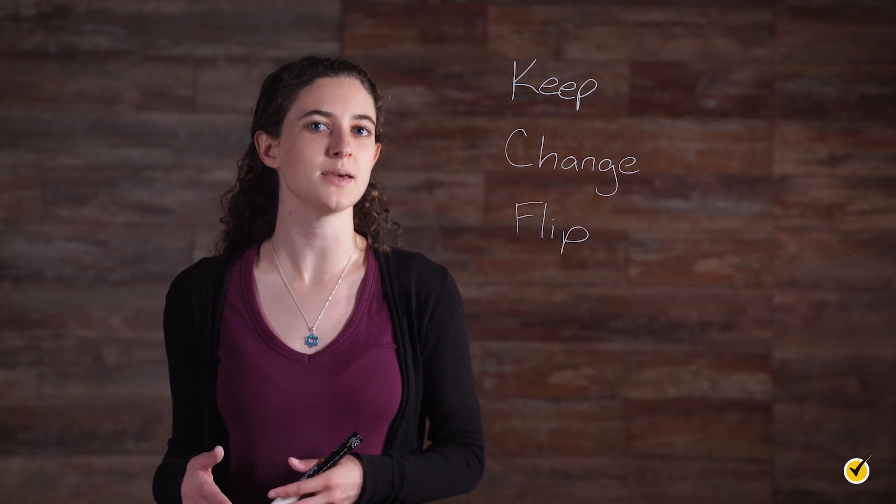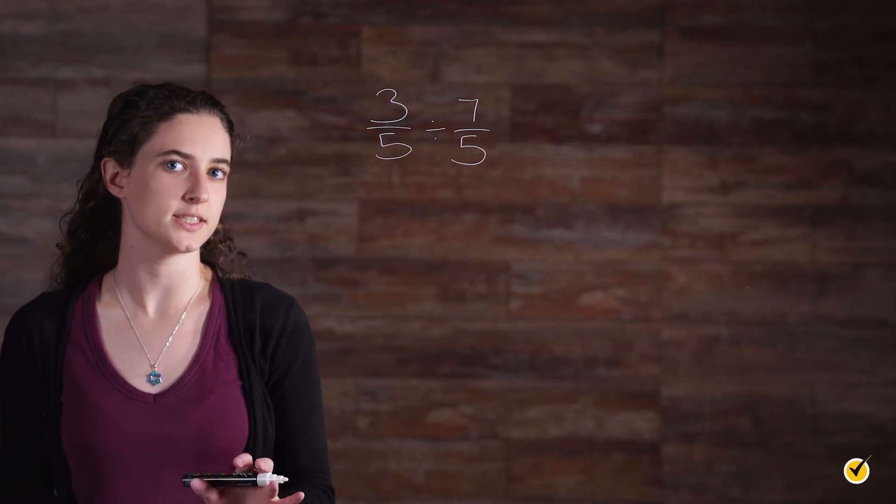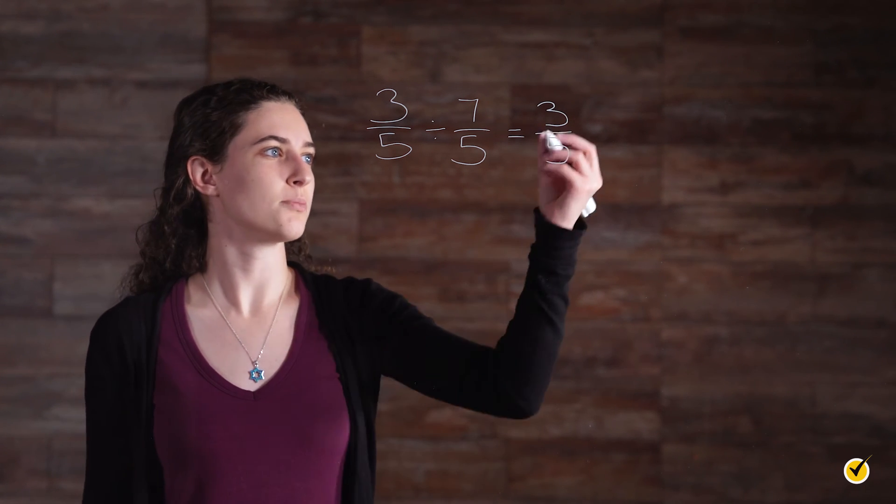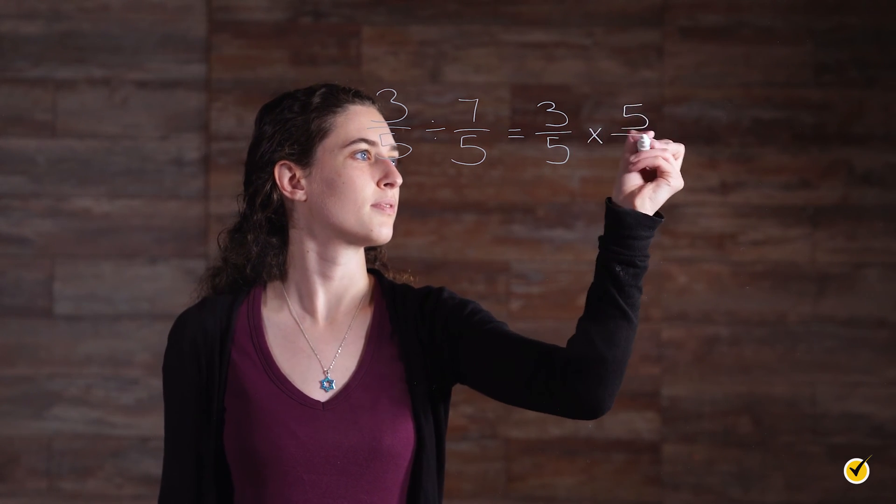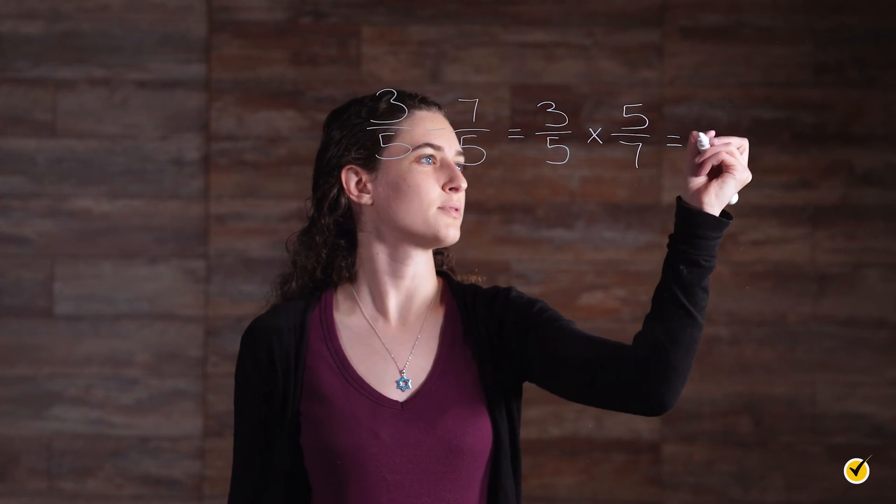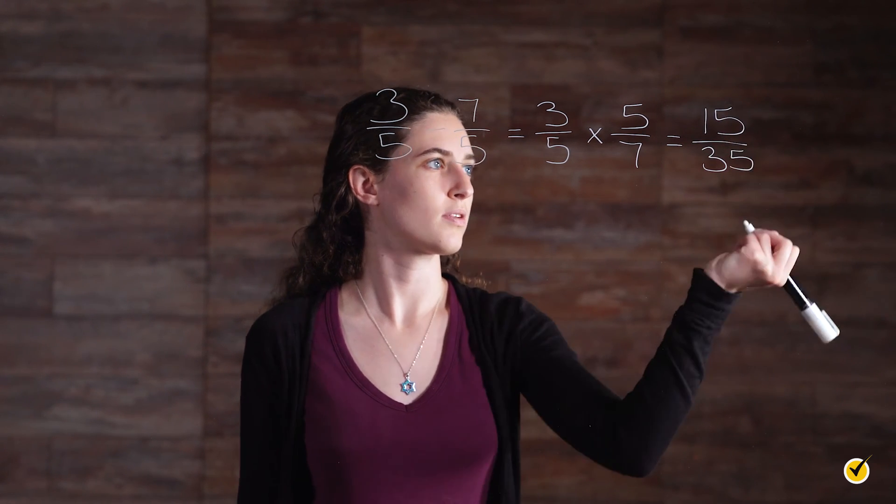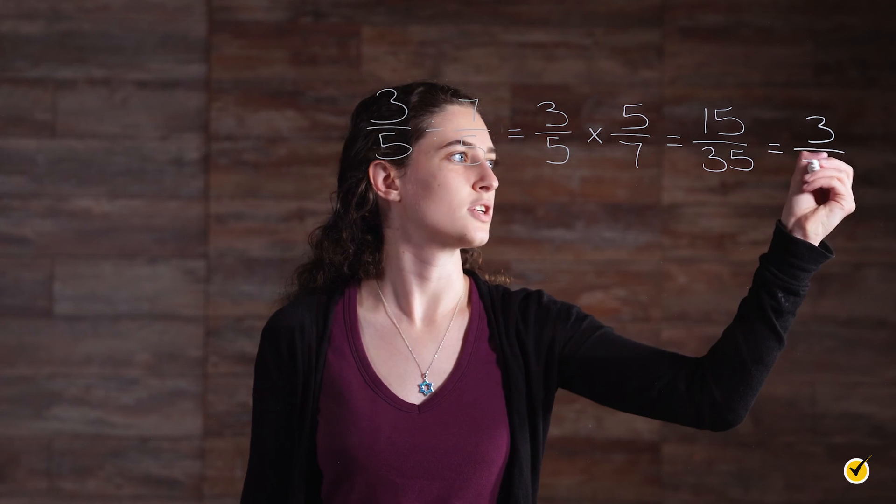Here's an example using the keep, change, flip process. Say we want to divide 3 fifths by 7 fifths. We'll keep the first fraction as is, change the operation from division to multiplication, and flip the second number. Now we just multiply our numerators. 3 times 5 is 15, over 5 times 7 is 35, and then from there we simplify to 3 sevenths.